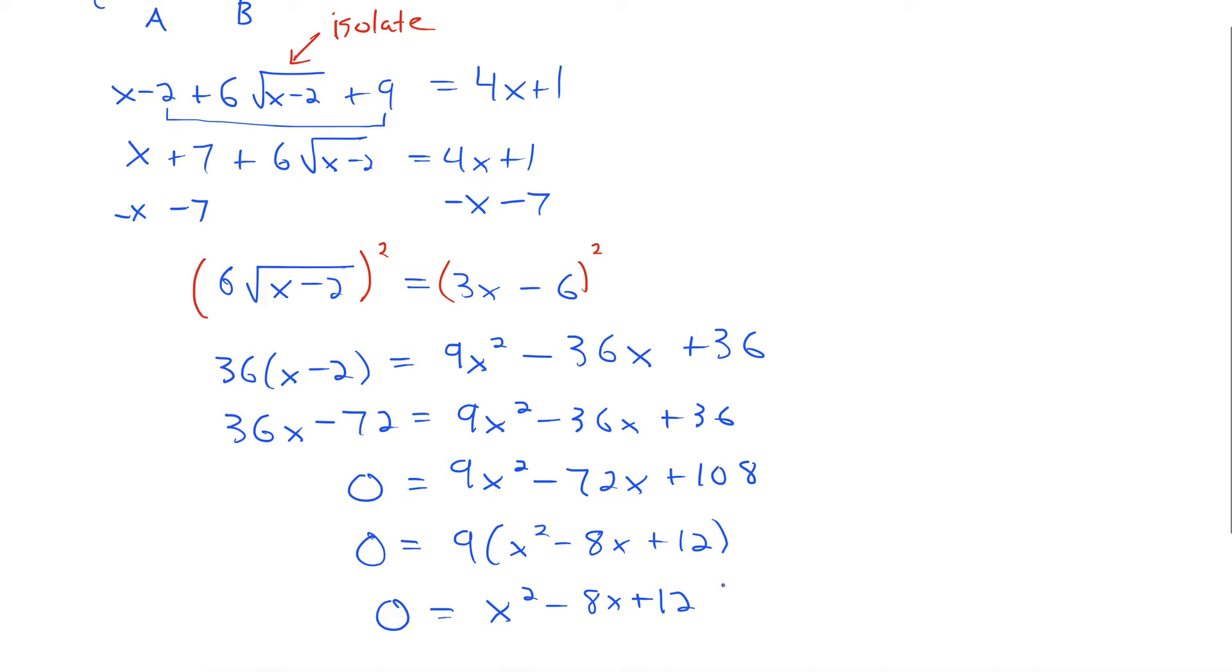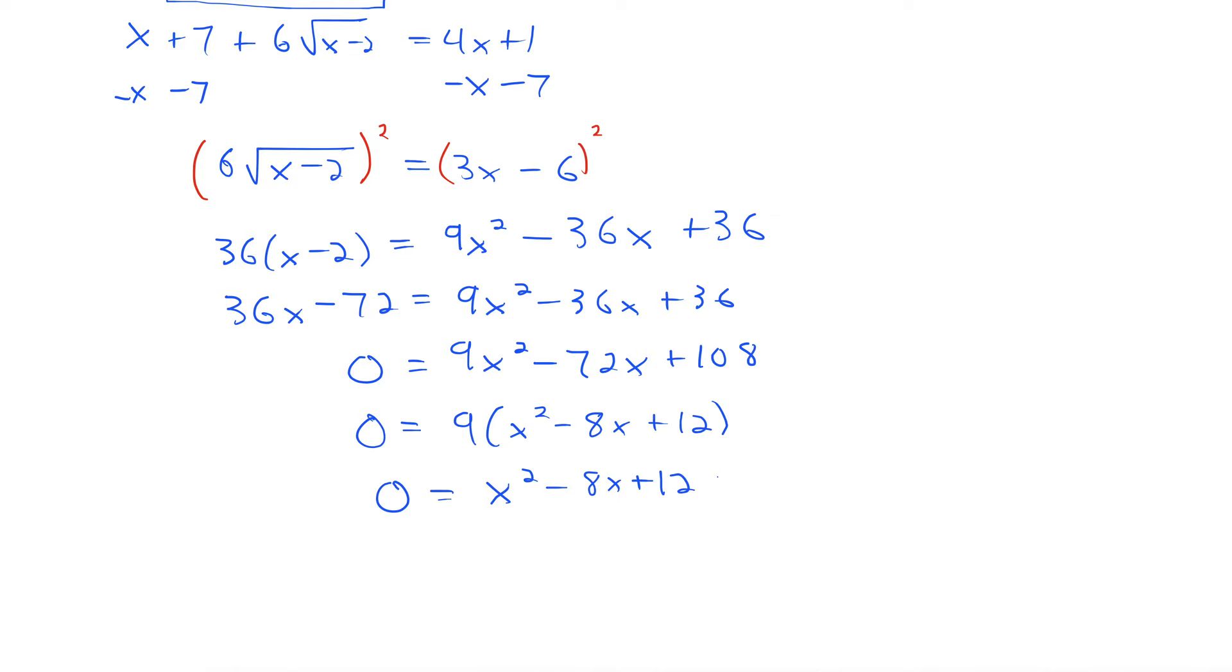Really we're just looking at 0 equals x squared minus 8x plus 12. This we can factor. We're looking for factors of 12 that add up to negative 8. How about negative 6, negative 2. Then setting both of these factors equal to 0 gives us x equals 6 and x equals 2.